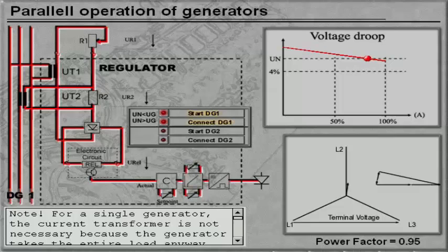For a single generator, the current transformer is not necessary, because the generator takes the entire load anyway. Therefore, some manufacturers have a switch which disconnects the current transformer wired in single operation. The regulator then regulates in relation to voltage alone.